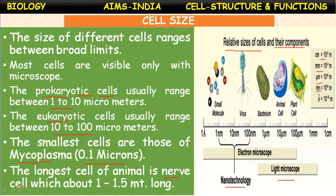Mitochondria are also known as the powerhouses of the cell. There are two types of plastids in the cell: chromoplastids and leucoplastids. Green plastids are called chloroplasts; other colored plastids are called chromoplastids. Vacuoles are storage sacs for solid or liquid contents, present in plant cells. Vacuoles in animal cells are more in number and small in size compared to plant cells. All cells arise from pre-existing cells — a statement given by Rudolf Virchow.